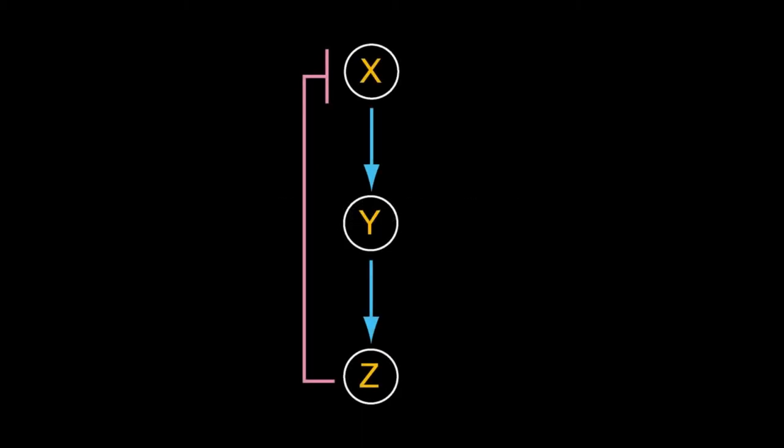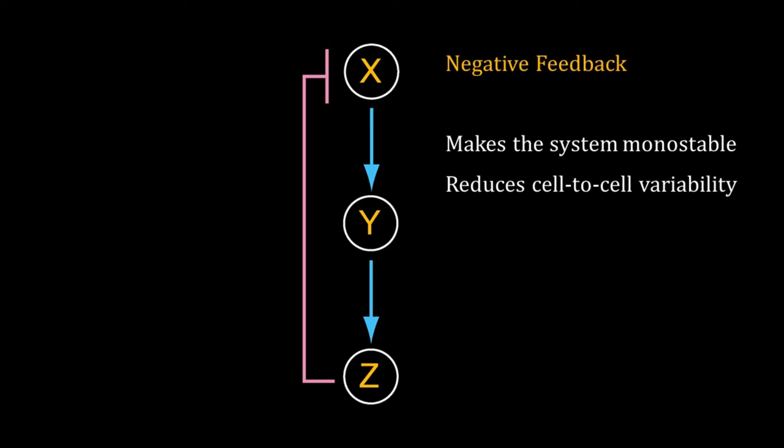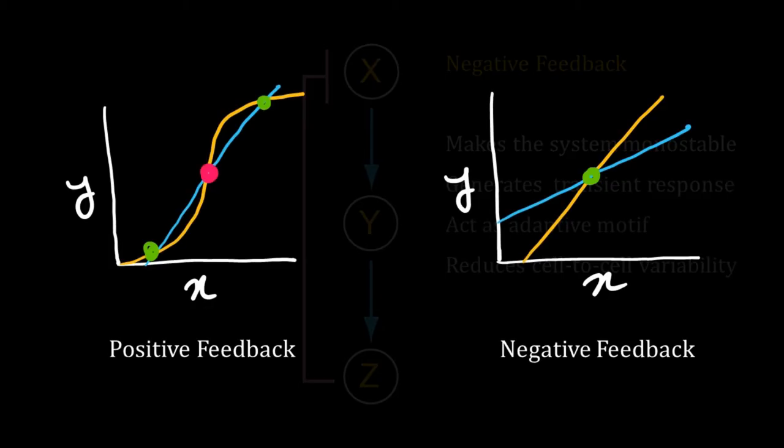This is a negative feedback, another very common network motif. X activates Z through Y, but Z inhibits X. Negative feedback makes a system monostable, meaning the system will have one stable steady state. This property is just opposite of bistability that we have seen earlier.